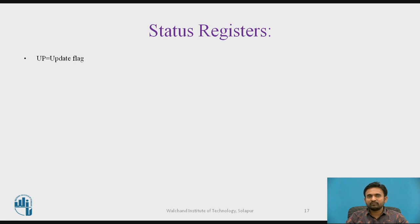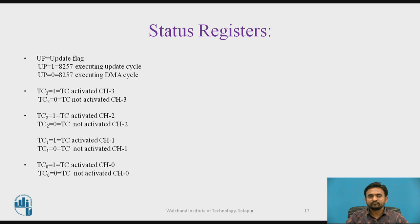About the D5 bit UP, the update flag: if UP equals 1, the 8257 is executing an update cycle; if UP equals 0, the 8257 is executing a DMA cycle. About the TC bits: if TC equals 1, TC is activating channel 3, 2, 1, and 0 respectively, corresponding to flag values TC3, TC2, TC1, and TC0. If TC equals 0, TC is not activating that channel with respect to TC3, TC2, TC1, and TC0.